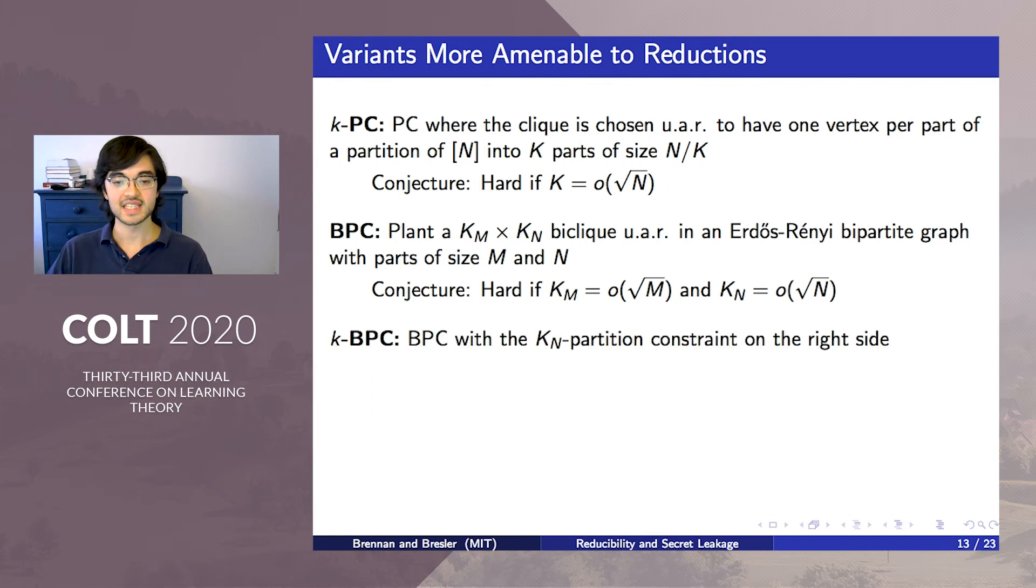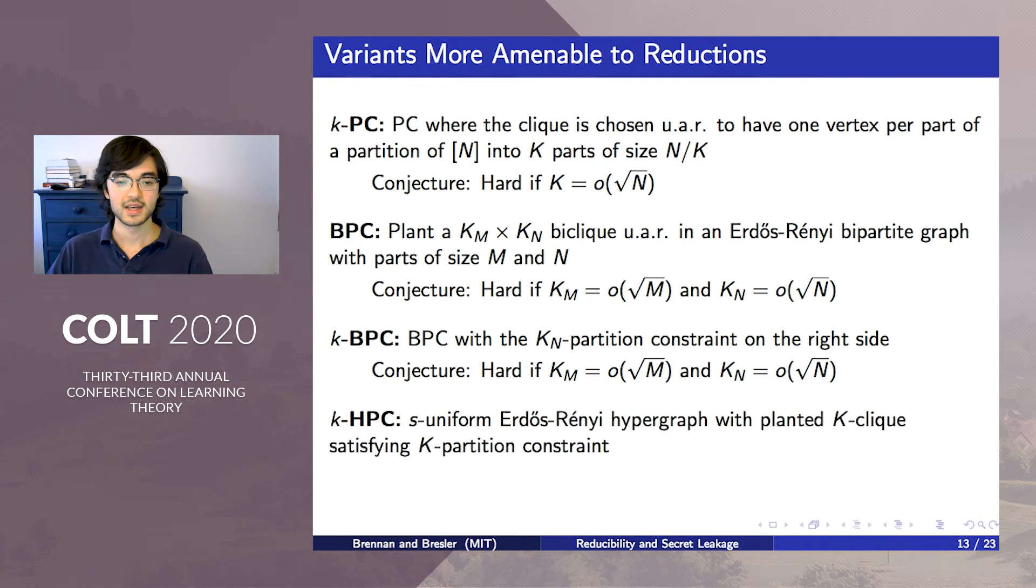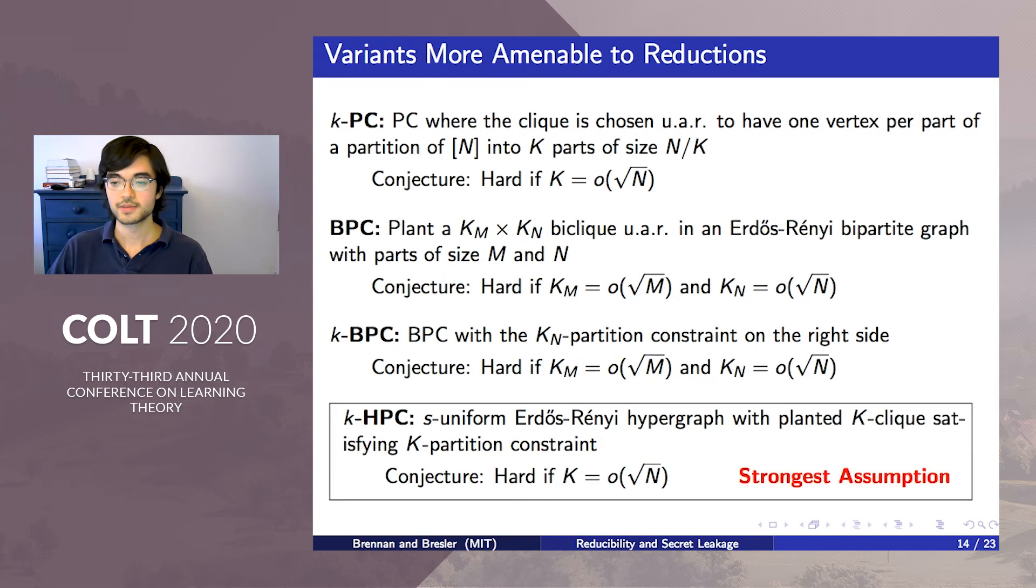Our third variant adds a k-partition constraint to one side of bipartite PC. We conjecture that the barrier in this variant remains unchanged. And our last variant is the natural S-uniform hypergraph variant of k-PC. We also conjecture that the barrier in this problem is still at k as root n. Also, k-HPC is our strongest assumption and implies the other three conjectures, and therefore it also implies all of our lower bounds.